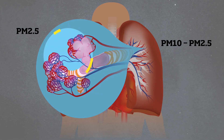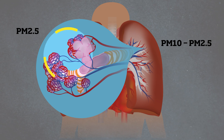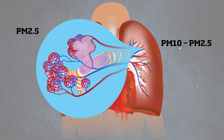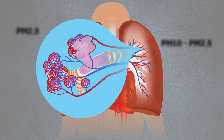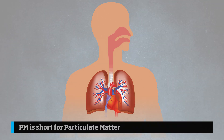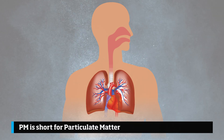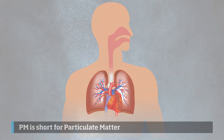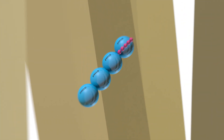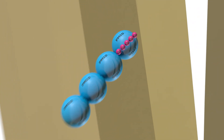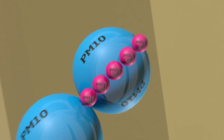Industry terms used to characterize these sizes of aerosols are PM10, PM4 (also known as respirable), and PM2.5. PM is short for particulate matter, and the number represents the size of the particle in micrometers. In contrast, the human hair is roughly 50 to 70 micrometers in diameter.